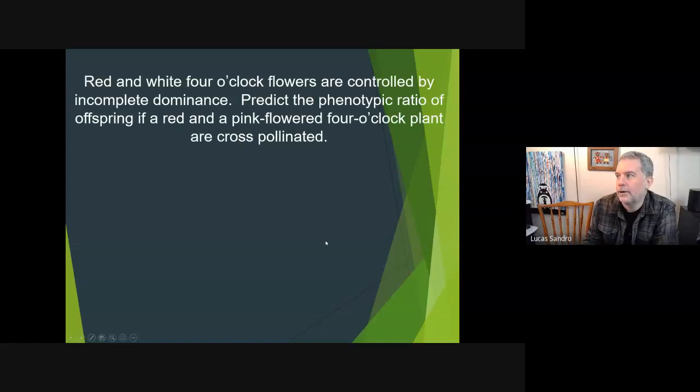If we have a problem like this - red and white four o'clock flowers - we're immediately going to write down: I want big R to be red, and I want big R with the little mark (call it an apostrophe, call it prime) - big R prime to be white.